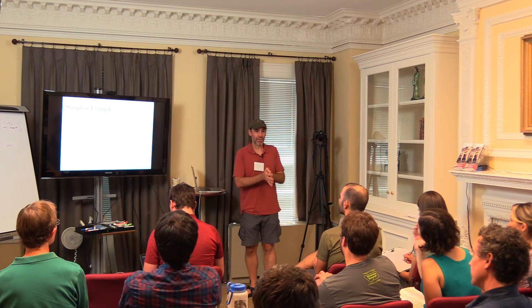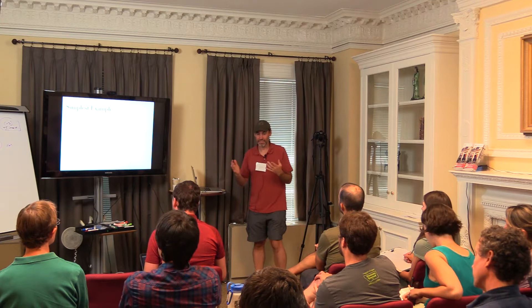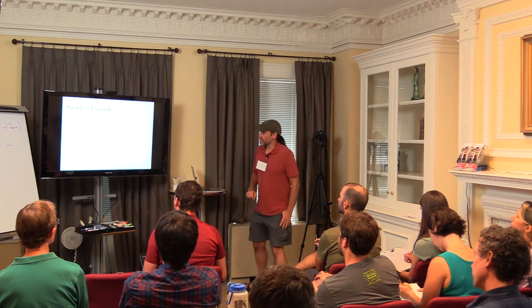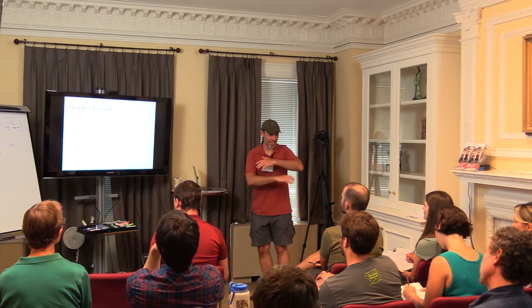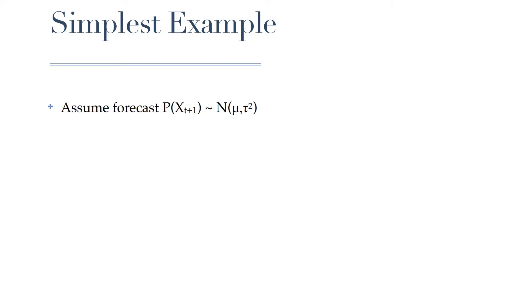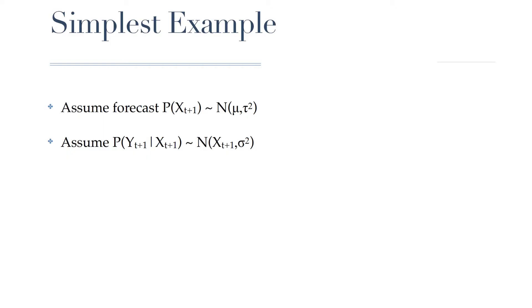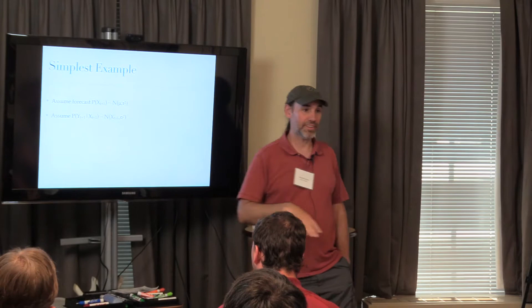I'm going to start with the simplest possible case of data assimilation. Whenever statisticians want to make life as simple as possible, they assume everything is Gaussian distributed—so we'll do that. We'll assume our forecast is Gaussian distributed with some mean and variance. We'll also assume the observation is Gaussian distributed with some observation error. There's no bias correction in here, no calibration model—just simple observations distributed around the true value with some observation error.